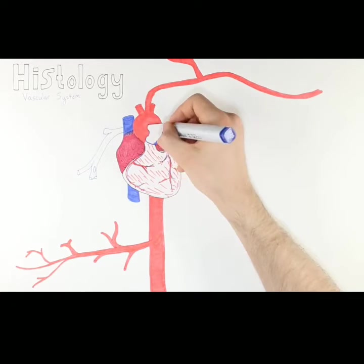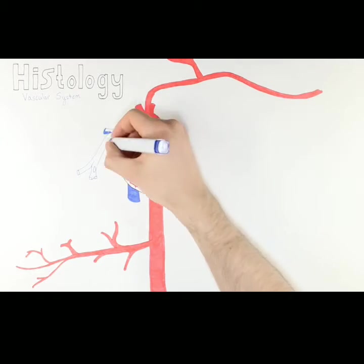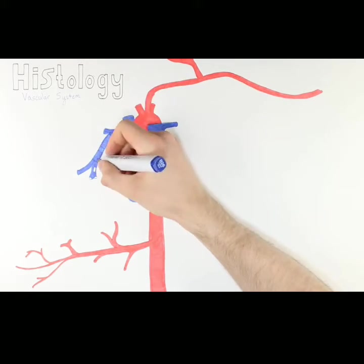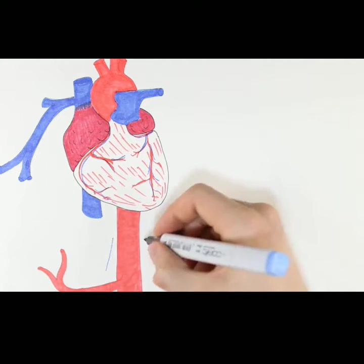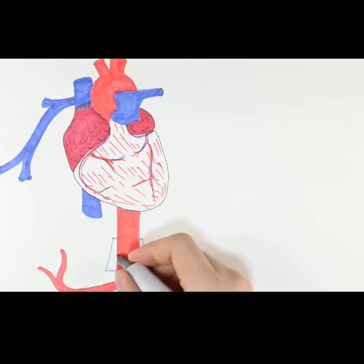For this reason, it means that the pressure in the arteries is going to far exceed the pressure in the veins. Therefore, arteries and veins must adequately accommodate for this difference in blood flow dynamics. Let's start by taking a look at some different types of arteries and explore their histological makeup and how they fulfill the needs of the body.